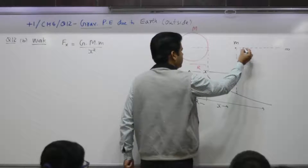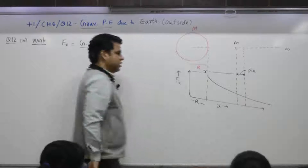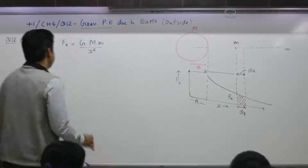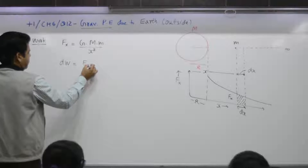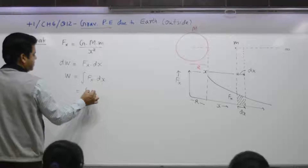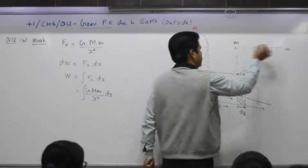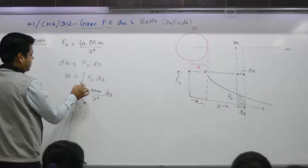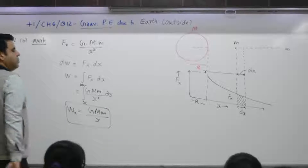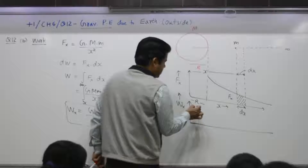To find work done, move the object from this point to infinity. Find the small amount of work done in moving from x to x plus delta x — displacement dx. On the graph, small work done is F(x) dx, area under the graph. Total work done integrates to GMm over x squared dx with limits x to infinity, and the result is the same: GMm over x.